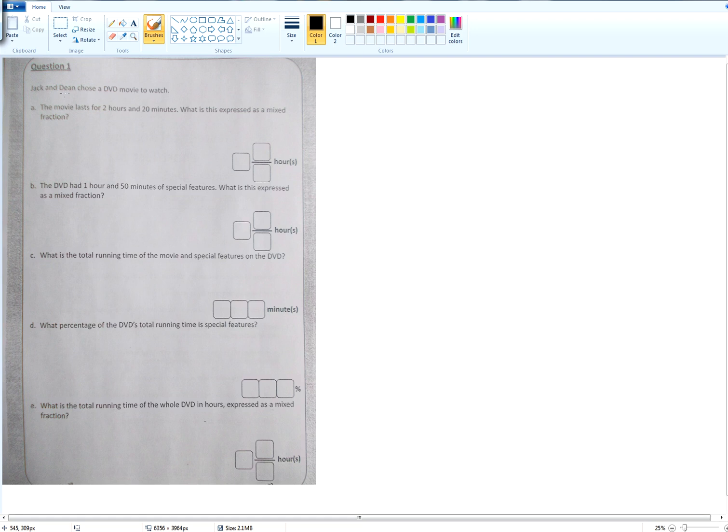Question one. Jacqueline Dean choose a DVD movie to watch. The movie lasts for two hours and 20 minutes. What is this expressed as a mixed fraction? I don't want anybody to answer at the moment. I'm just going to go through the solution. So we have two hours and 20 minutes. Remember, 20 minutes is 20 out of how many? How many minutes do you have in an hour?